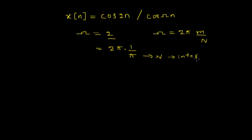Here, pi is not an integer. Therefore, we cannot express omega in terms of rational multiple of 2 pi. Therefore, the conclusion is the given signal is aperiodic. It is non-periodic.